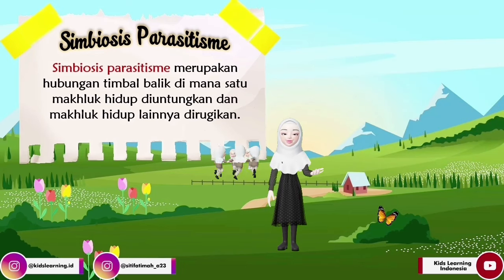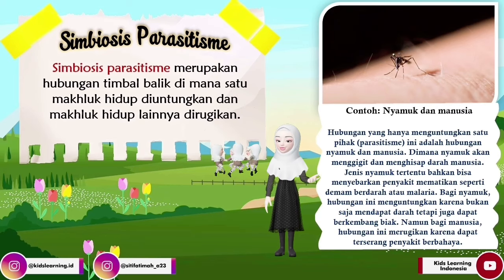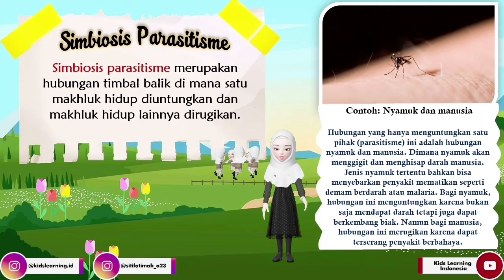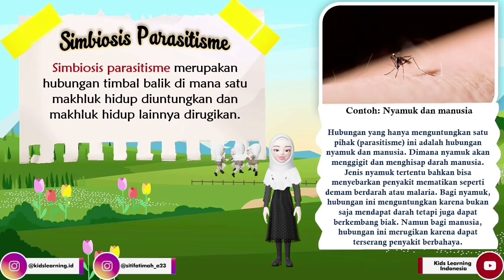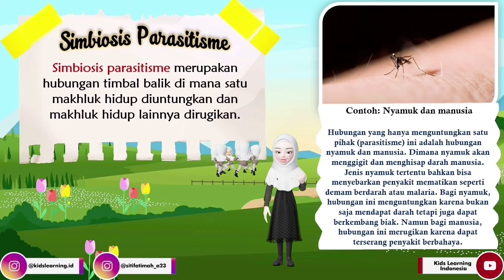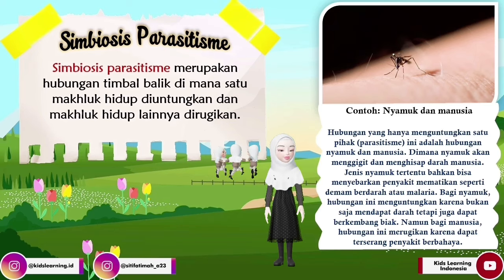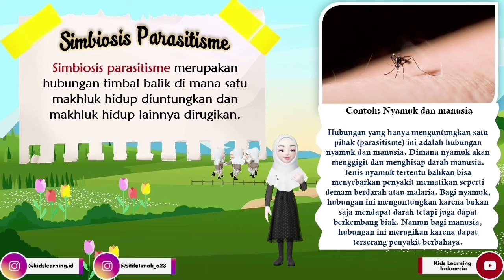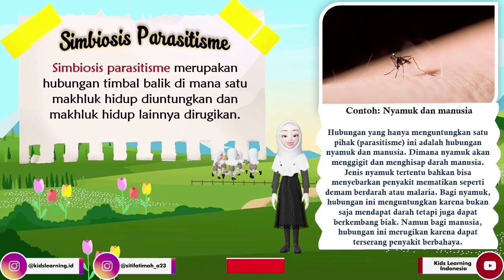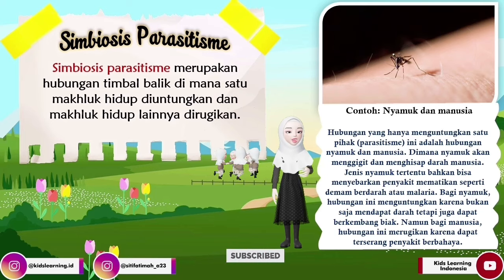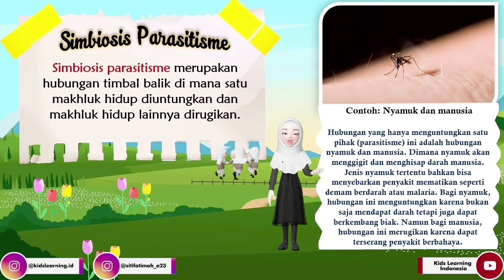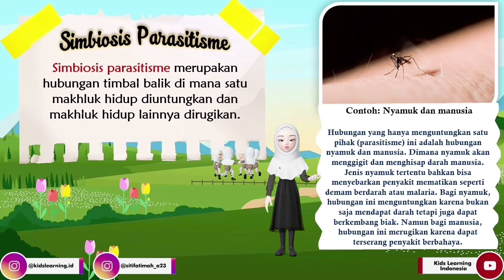Oke, contoh selanjutnya yaitu ada nyamuk dan manusia. Hubungan yang hanya menguntungkan satu pihak ini, atau disebut dengan simbiosis parasitisme, adalah hubungan antara nyamuk dan manusia. Di mana nyamuk akan menggigit dan menghisap darah manusia. Jenis nyamuk tertentu bahkan bisa menyebarkan penyakit mematikan seperti demam berdarah atau malaria. Bagi nyamuk hubungan ini menguntungkan karena bukan saja mendapatkan darah tetapi juga dapat berkembang biak, namun bagi manusia hubungan ini merugikan karena dapat terserang penyakit berbahaya.